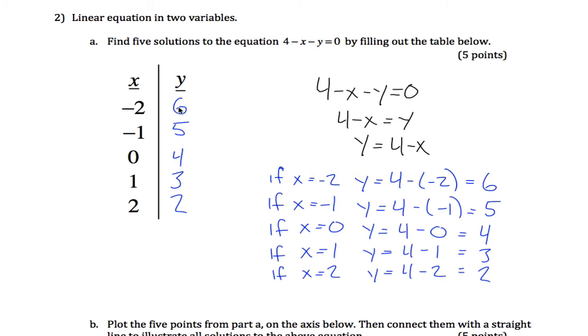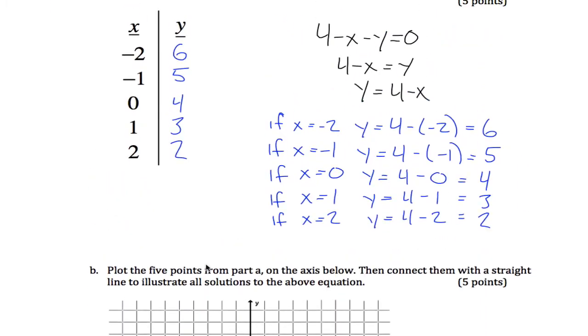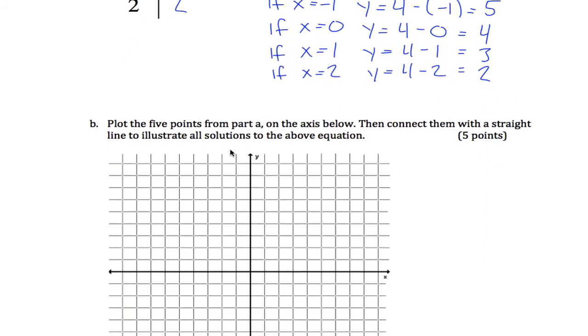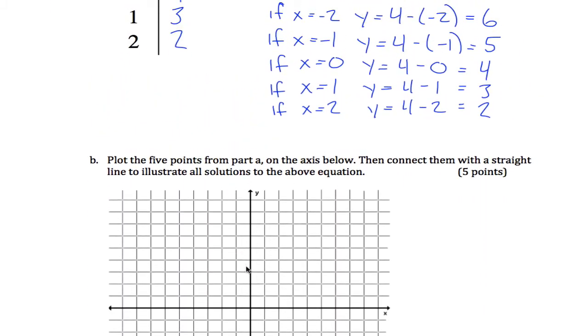When x equals negative 2, y equals 6, we get a solution to this equation. Now it wants me to plot these points on the graph. Our first point was when x equals negative 2, which is over here, my y equals 6. Counting up: 1, 2, 3, 4, 5, 6, it looks like right here.